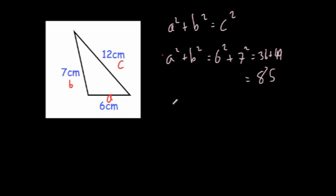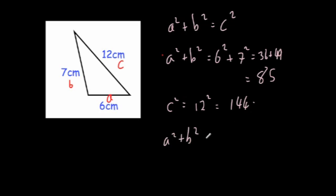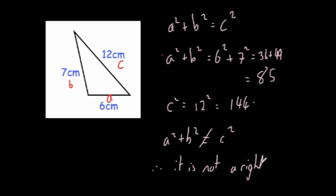Now let's try c squared. C squared equals 12 squared, which is 144. Therefore, they're not the same as each other, so a squared plus b squared does not equal c squared. Therefore, it is not a right-angled triangle.